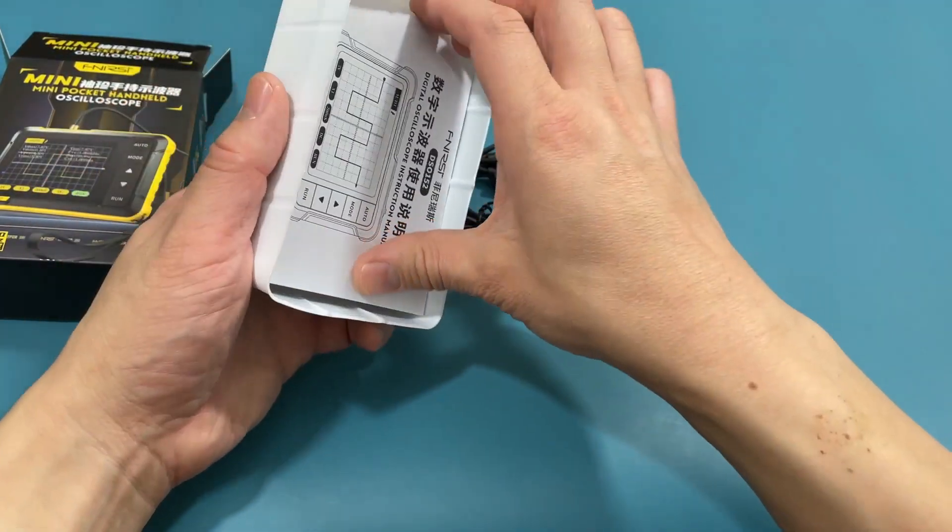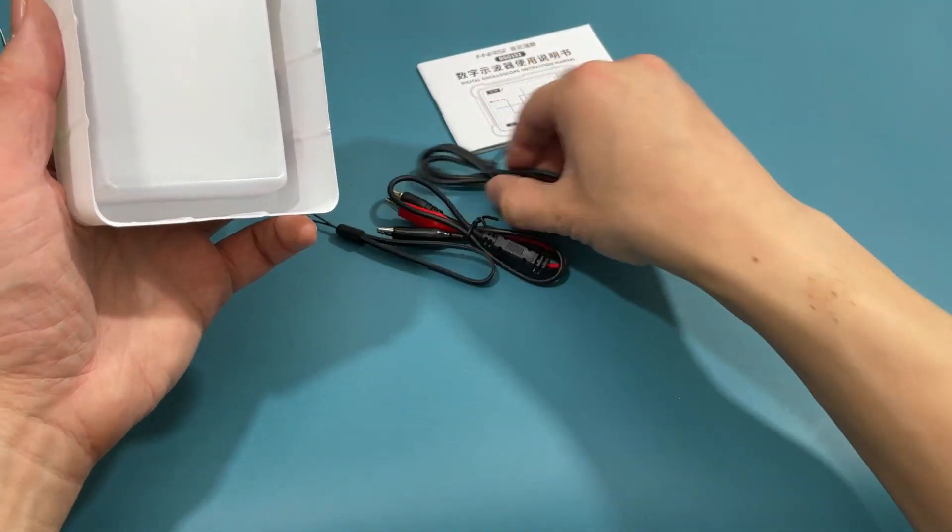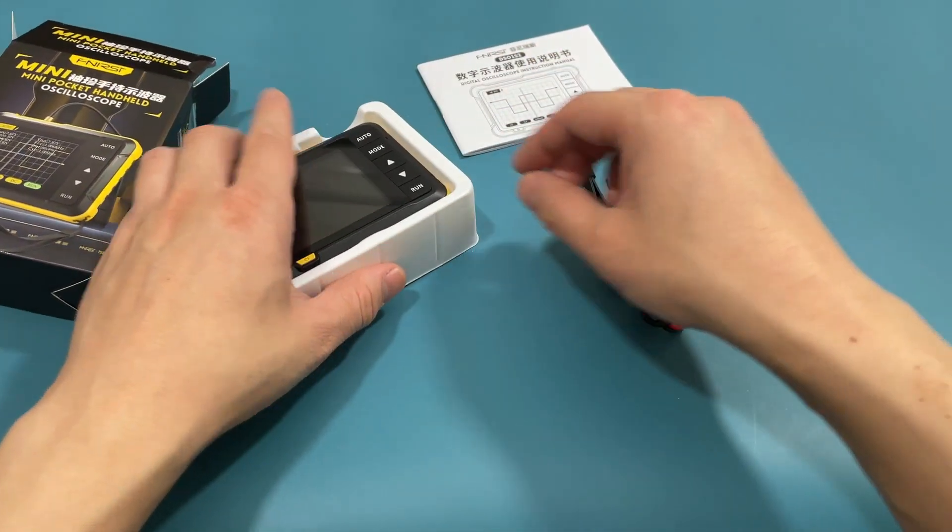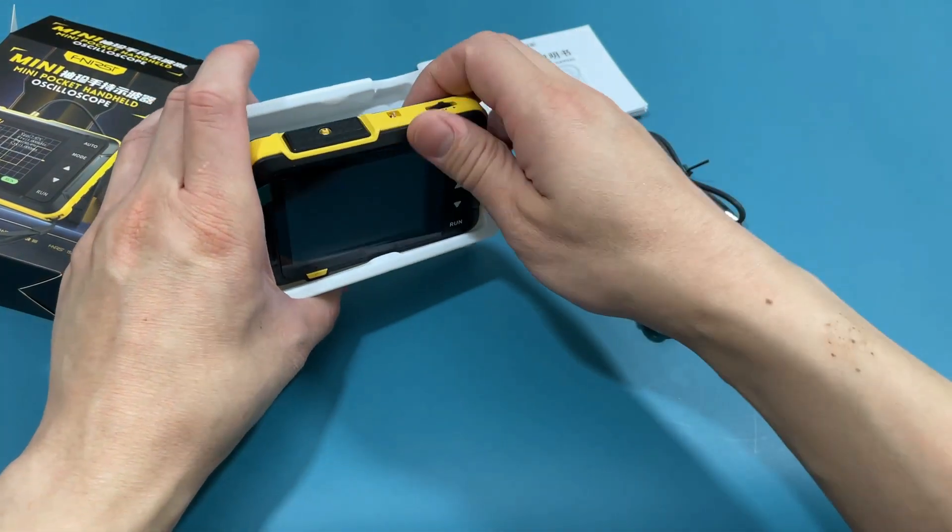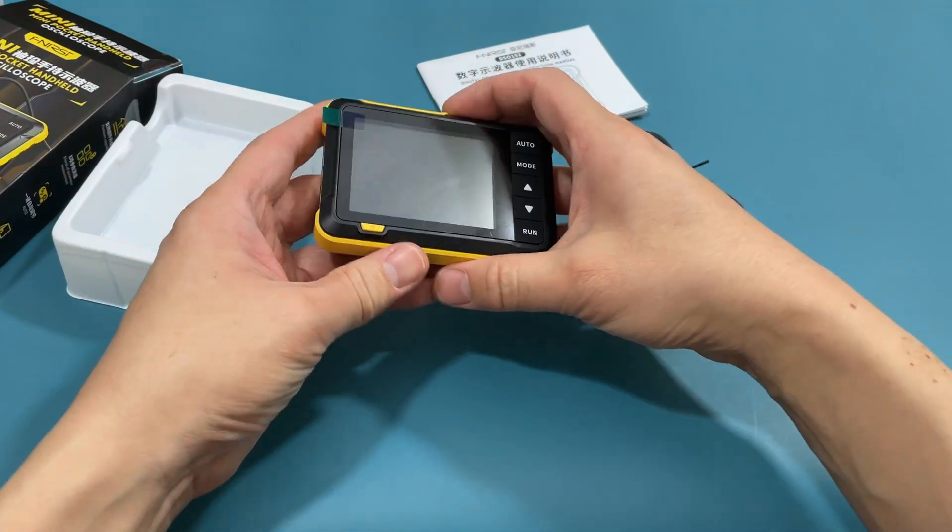The box includes the oscilloscope, an instruction manual, a charging cable, an alligator clip probe, a lanyard, an adapter, and a high voltage probe.